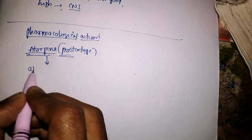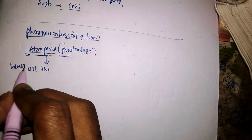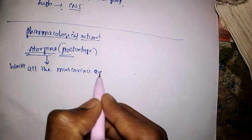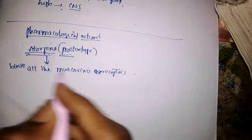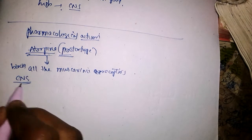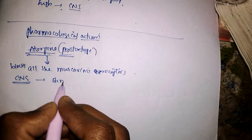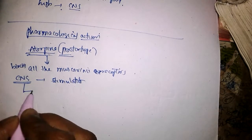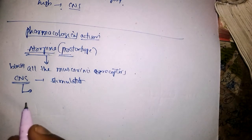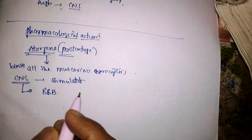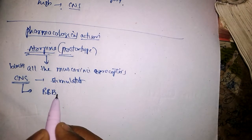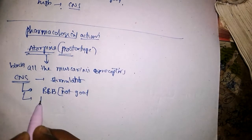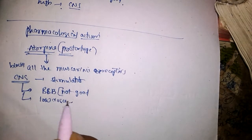Atropine blocks all the muscarinic receptors. Coming to action on CNS, the overall action is stimulatory — it has a stimulant action on CNS. However, its permeability through the blood-brain barrier is not good. Hence, if you give low doses, we will see only peripheral action.